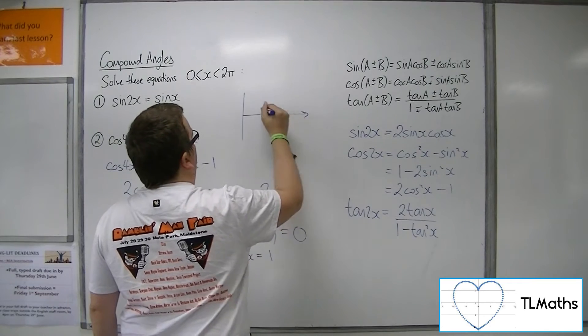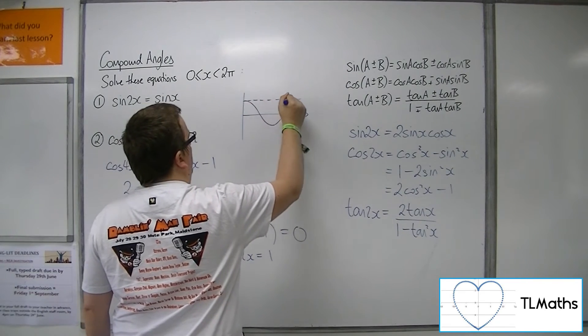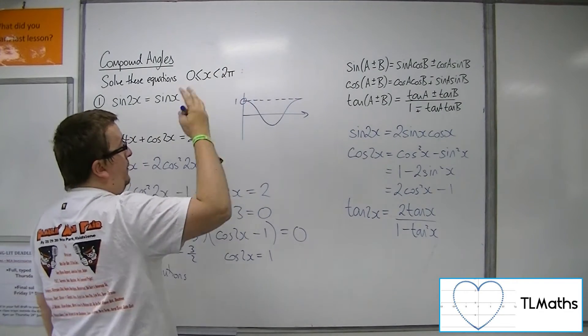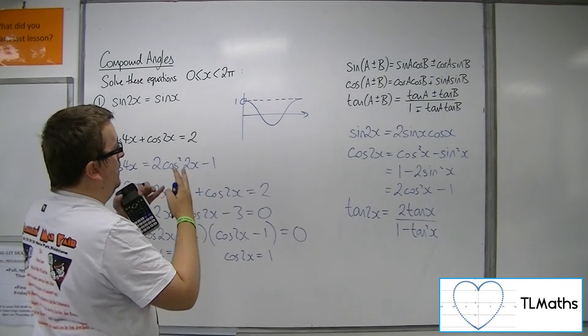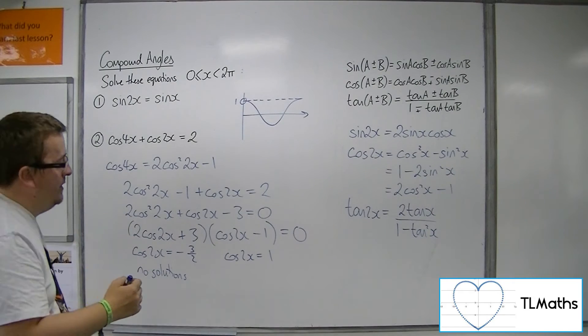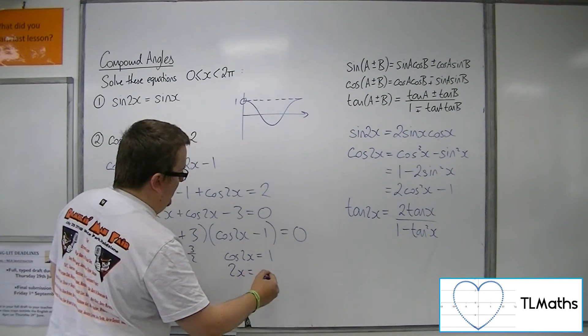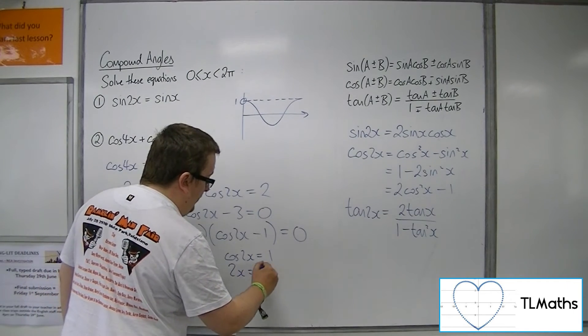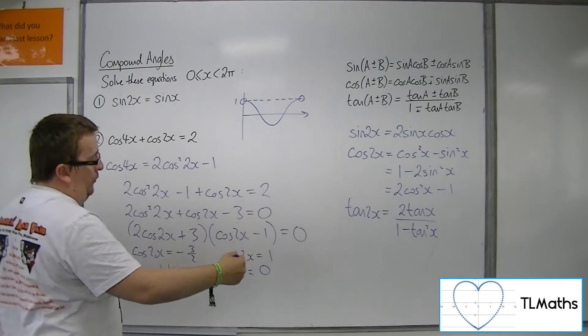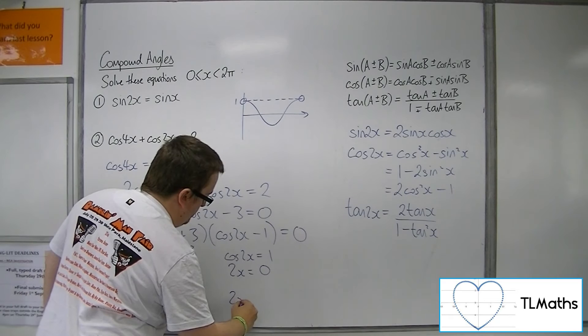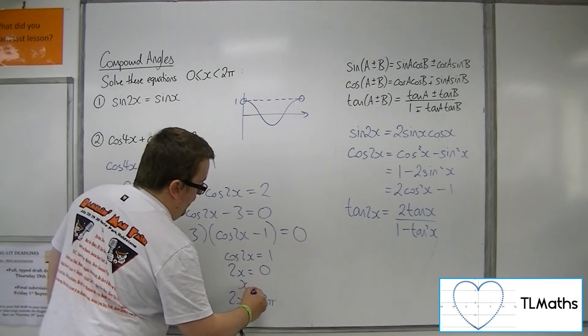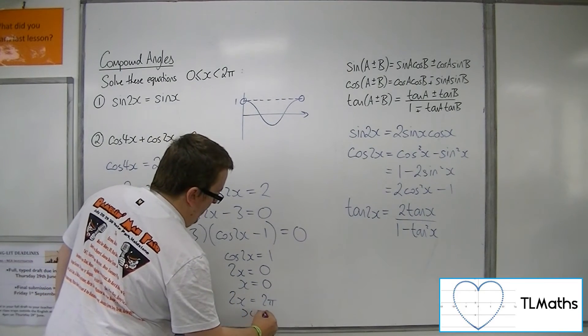So cos is 1 at 0, and, well, the 2π is not counted, but we don't need that alternative solution there. So we can say that 2x is equal to 0, well, let's include it, or 2π. It makes sense to include it, really. So either x is 0, or x is π.